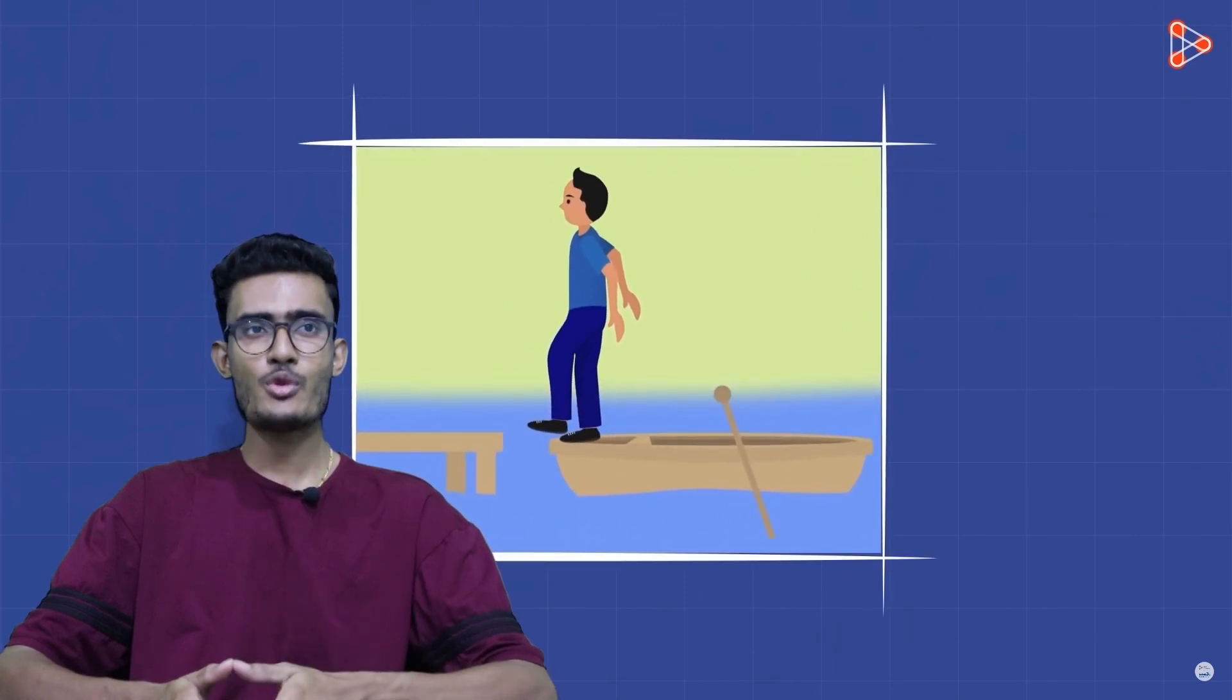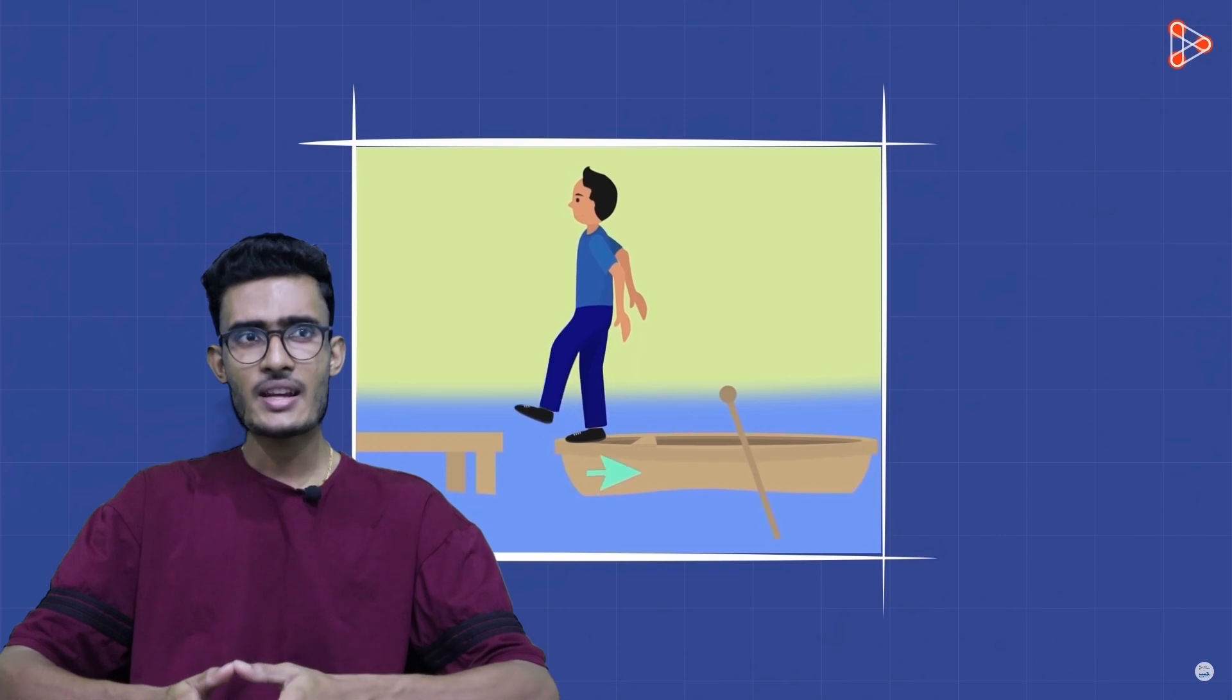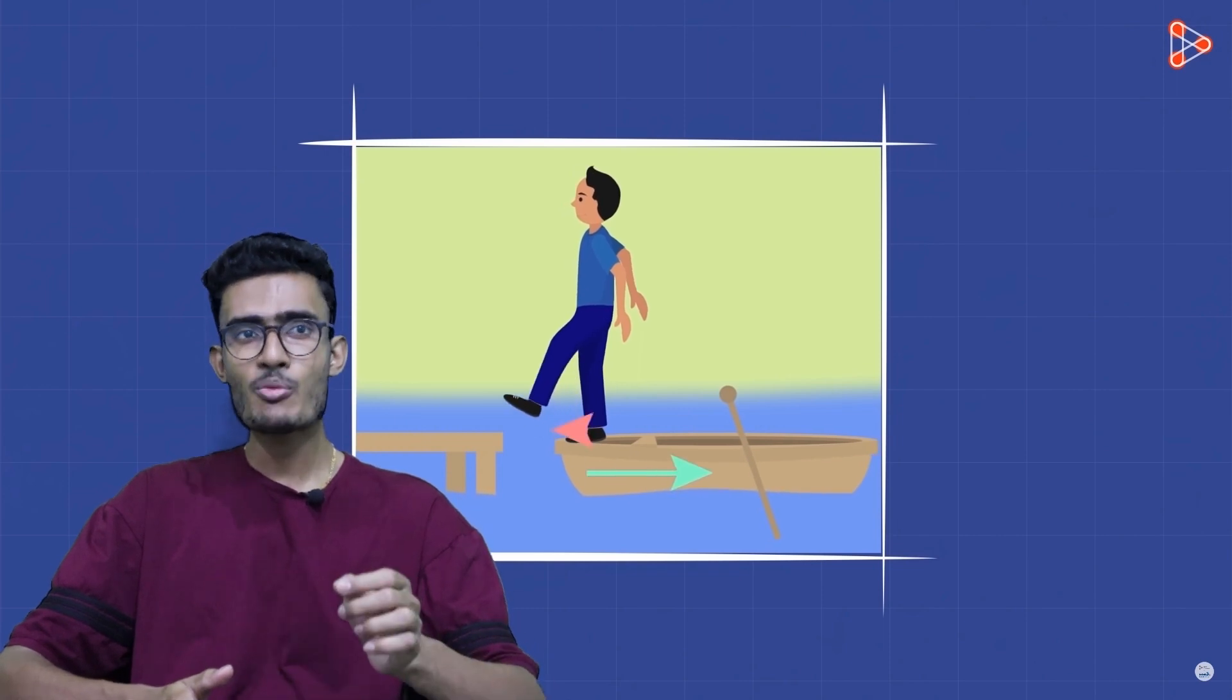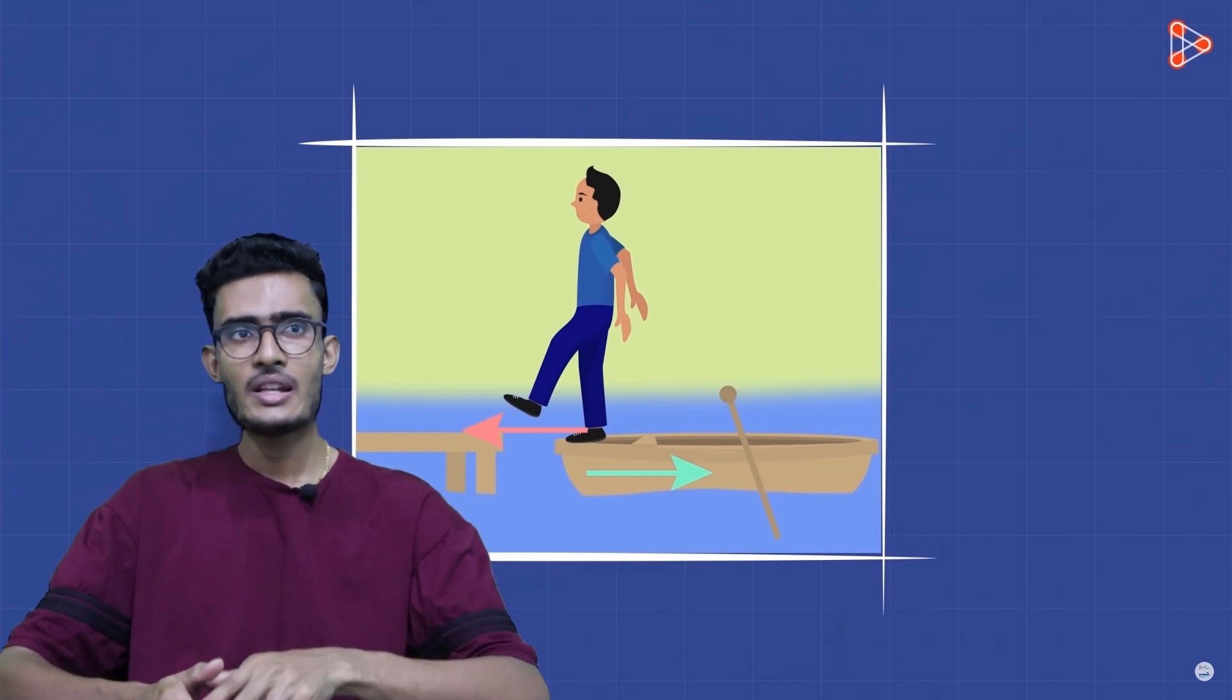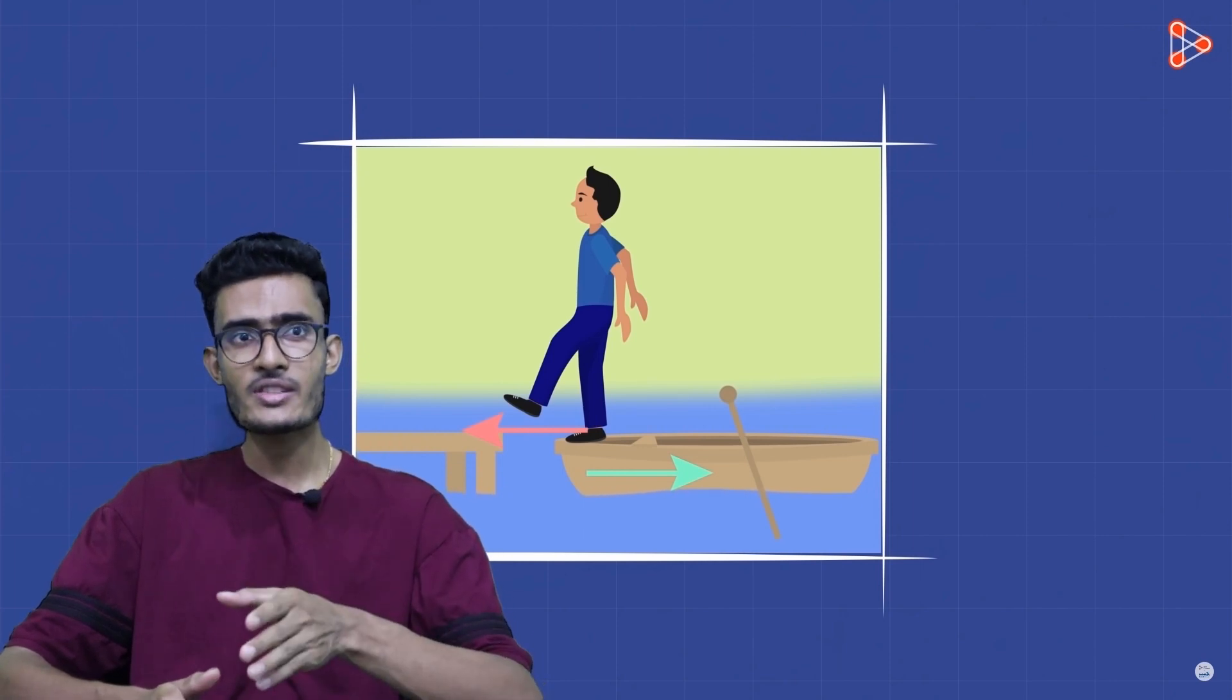Finally, the third law of motion is often called the law of action and reaction. It states that for every action there is an equal and opposite reaction. This means that when two objects interact with each other, they exert equal and opposite forces on each other.